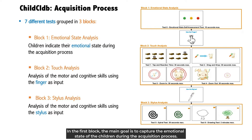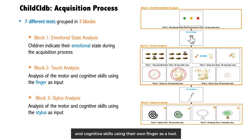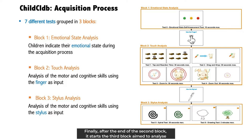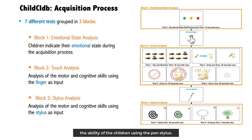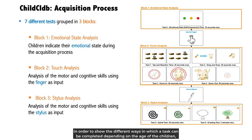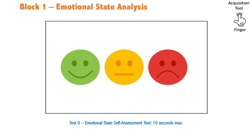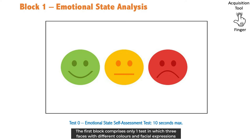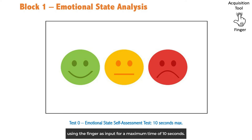In the first block, the main goal is to capture the emotional state of the children during the acquisition process. The first block comprises only one test in which three faces with different colors and facial expressions were represented on the screen, asking the children to touch one according to their emotional state using the finger as input for a maximum time of 10 seconds.